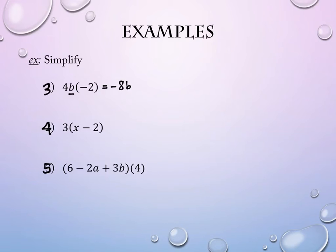On number four, it actually is a distributive property problem because there is subtraction inside the parentheses. So as I distribute that three through, I get the result.